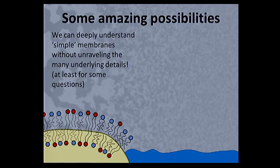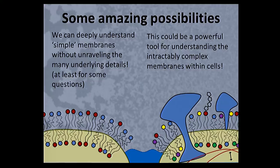In these simple membranes — which are not so simple, they're two molecular layers with hydrophobic and hydrophilic bits and many components — we can deeply understand them at a fundamental physical level, which is very satisfying. But the most exciting thing is that this gives us a tool to expand to more complex systems. Biological membranes are much, much more complicated than the ones I've been showing you. If we can apply some of these physical tools to these biological systems, we have a chance of really understanding something.